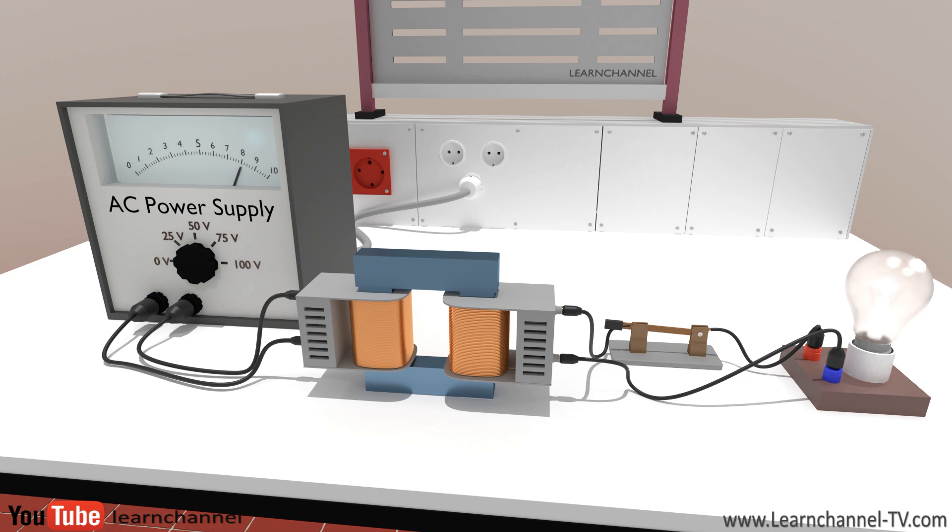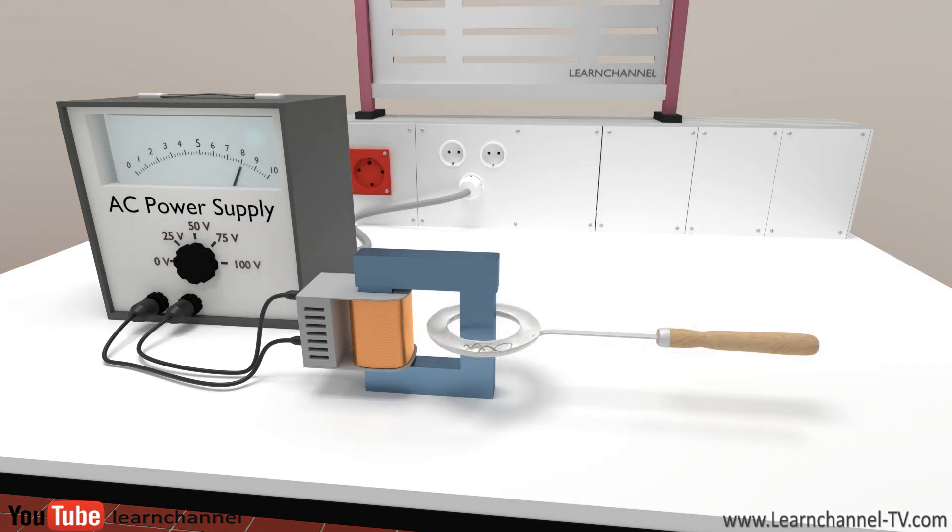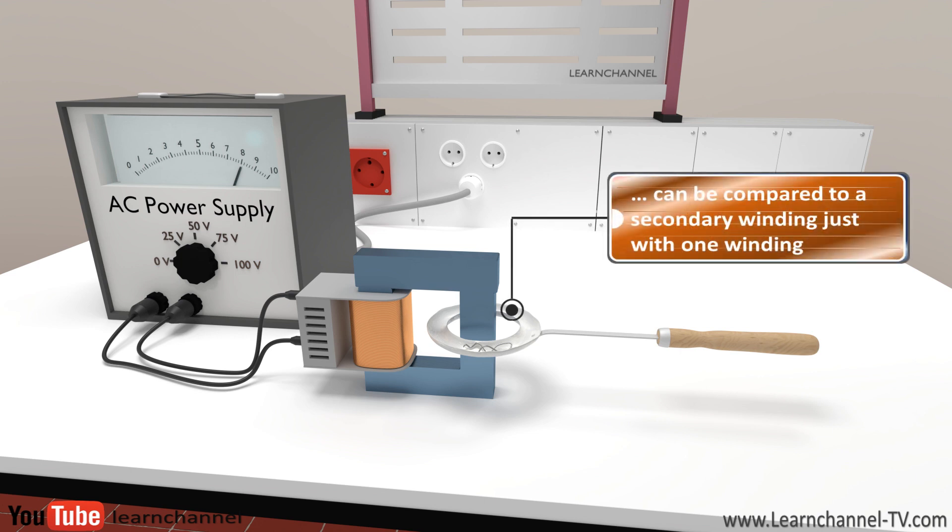Going back to our first experiment, where we melt solder, now we are able to explain it. The metal melt channel can be compared to a secondary winding with just one winding, which is short-circuited.